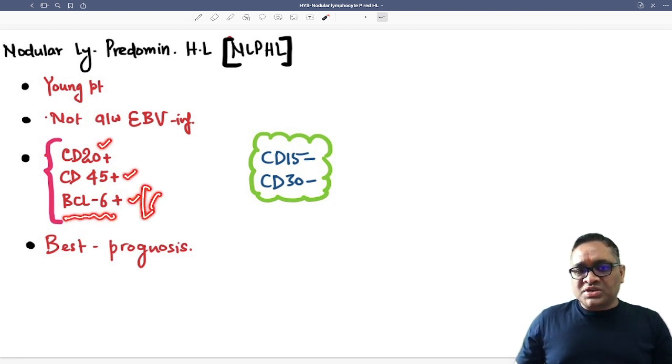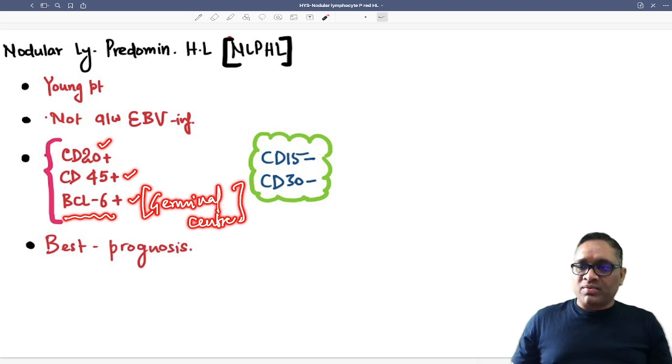BCL6 is a marker of germinal center because these tumors, these Hodgkin's lymphomas, they will arise from the germinal center of the lymph node. So that is also one important point we have to remember.